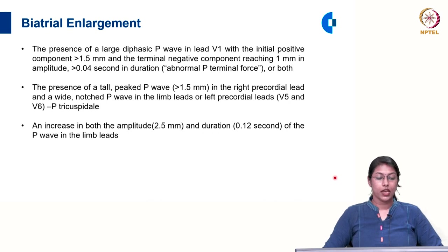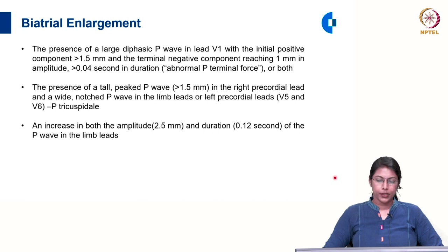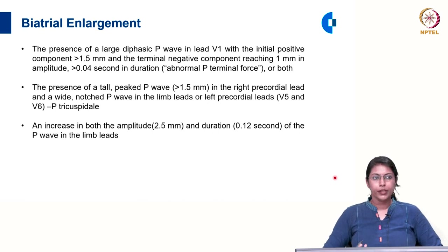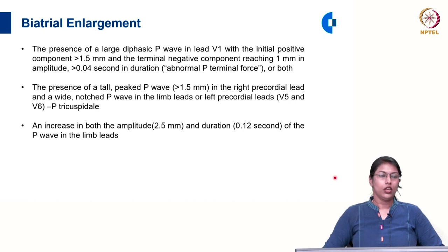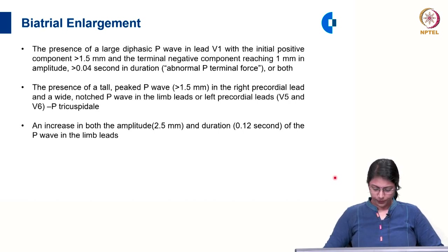This combined pattern is called P tricuspidale, or there may be an increase in both amplitude and duration of the P wave in limb leads. A combination of findings of right atrial abnormality and left atrial abnormality are seen in ECG if there is biatrial enlargement.